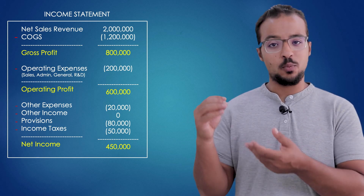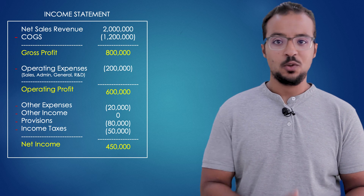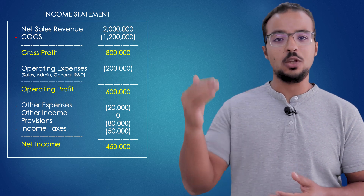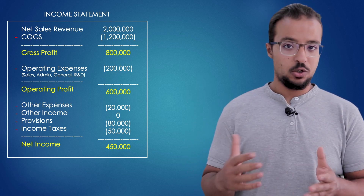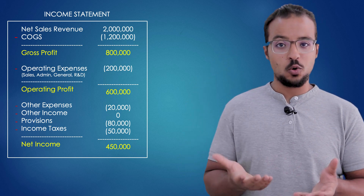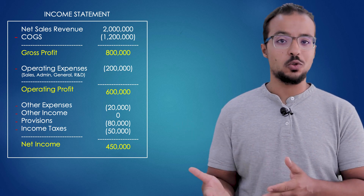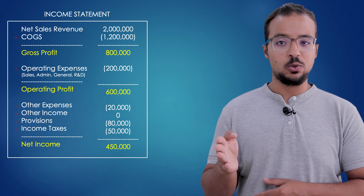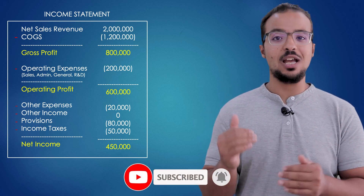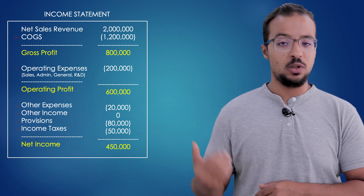Profitability analysis will allow us to understand our profitability numbers — for example, gross profit — on the level of different market characteristics: which customers are more profitable, which products, which countries, and so on. The easiest one to analyze is the gross profit because all the numbers included in it are directly related to sales. Gross profit equals net sales revenue minus cost of goods sold. Both numbers are directly related to sales, so if we sell one item we have a revenue, a cost of goods sold, and a gross profit.